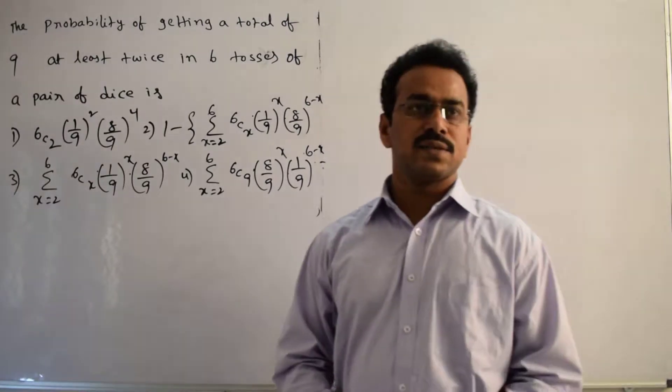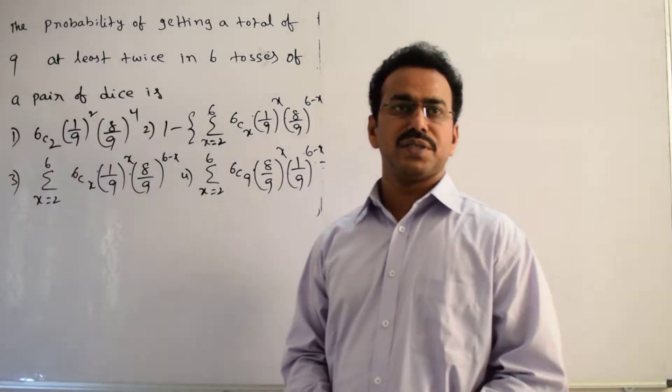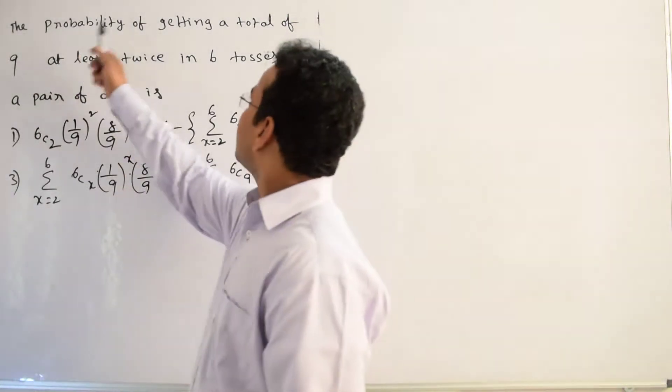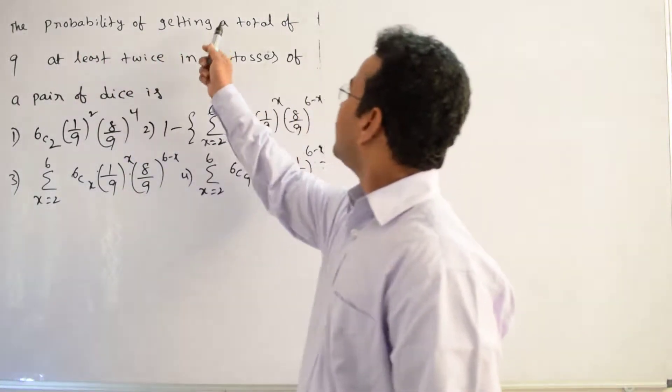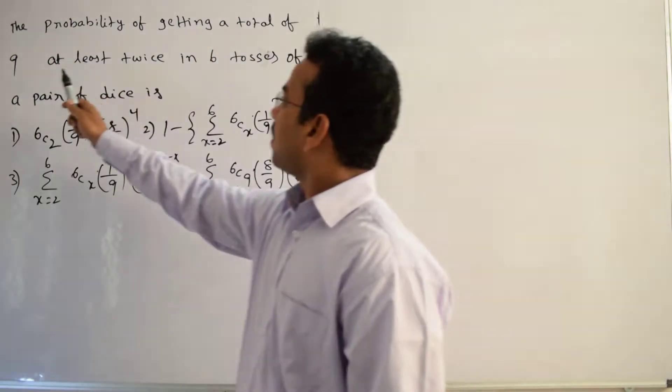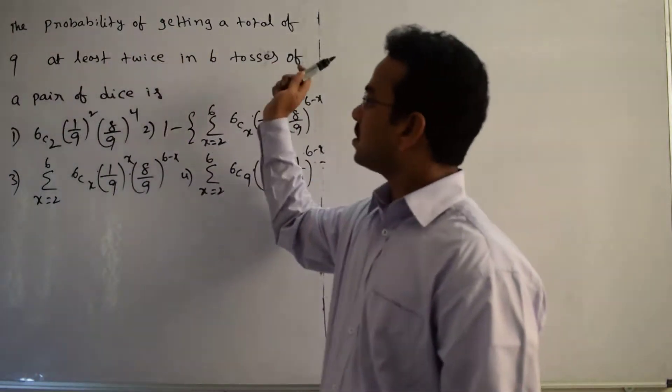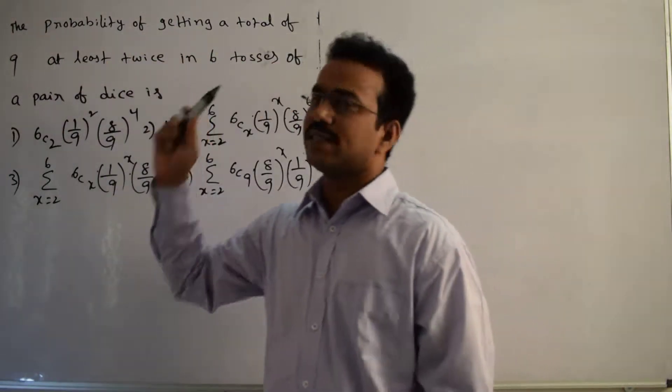Hi, let's discuss the solution of the given question. The question is: what is the probability of getting a total of 9 at least twice in 6 throws of a pair of dice?